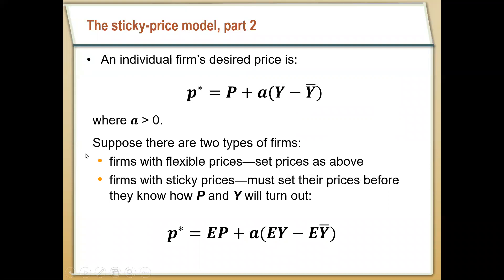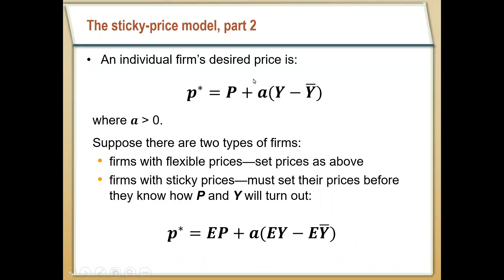In this model we assume there are two different kinds of firms. Firms with flexible prices can set their price however they see fit, so they always set their price to the desired price P*. On the other side, there are firms with sticky prices — like a grocery store — that have to set their prices according to expectations of what the price level and total output will be. A gas station is like a flexible price firm, easily changing prices in response to economic forces, whereas a supermarket has to set prices beforehand based on expectations of the overall price level and output.